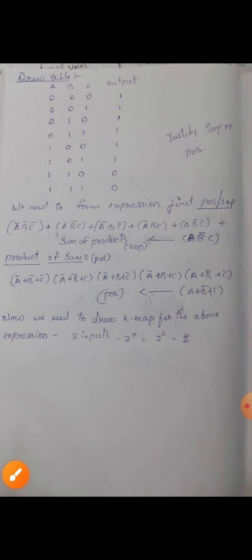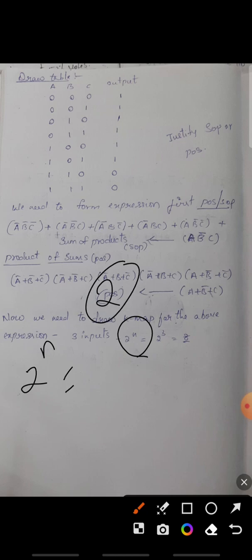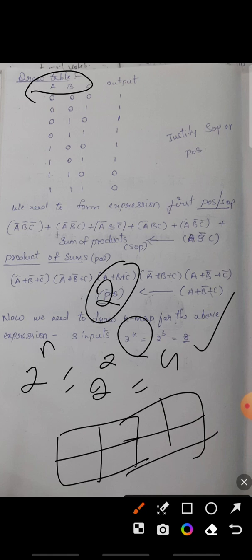The next step is to form a K-map. We use the formula 2^n, where n is the number of inputs. If inputs are two, we get 2² = 4 blocks. Here we have three inputs A, B, C, so we need 2³ = 8 blocks. We need to draw a K-map with eight blocks.